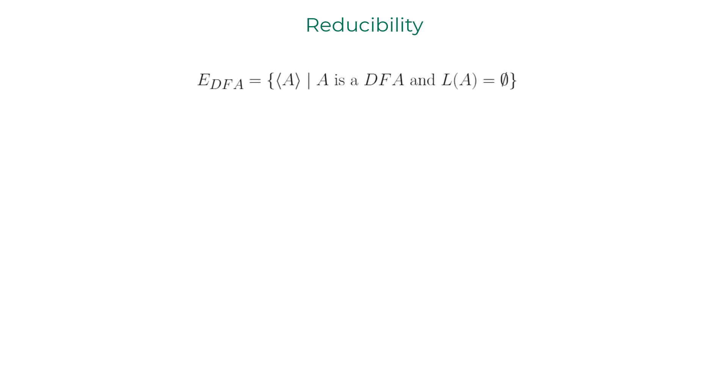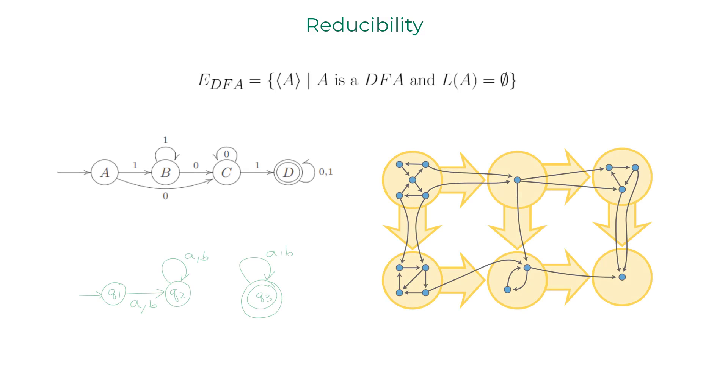The language EDFA, which is the machine descriptions of all the DFAs whose language is empty set, was proved as a decidable language in the last chapter on decidability. The summary of the proof is this: a DFA is a machine with finite number of states.